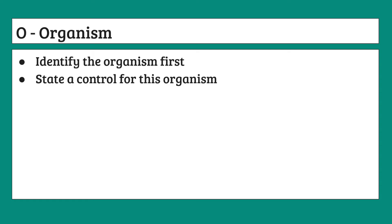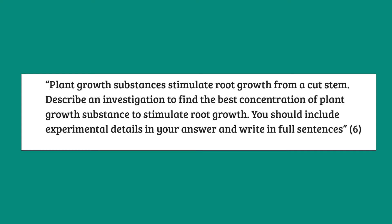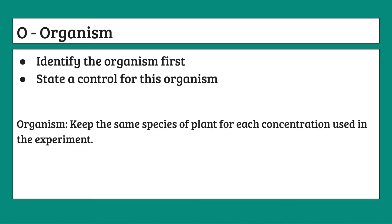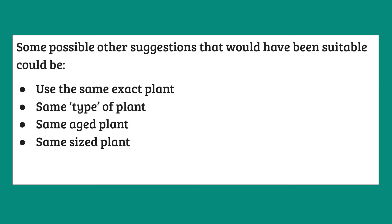Next up we have O, standing for organism. For organism, we have to identify the organism in the experiment and state a control for it. In our example, the organism is a plant because we are testing root growth. A control we can use is keeping the same species of plant for the investigation. Due to the nature of QORMS questions, there are often multiple valid answers in the mark scheme. Other acceptable controls include: using the same exact plant, the same type of plant, the same aged plant, or the same sized plant.